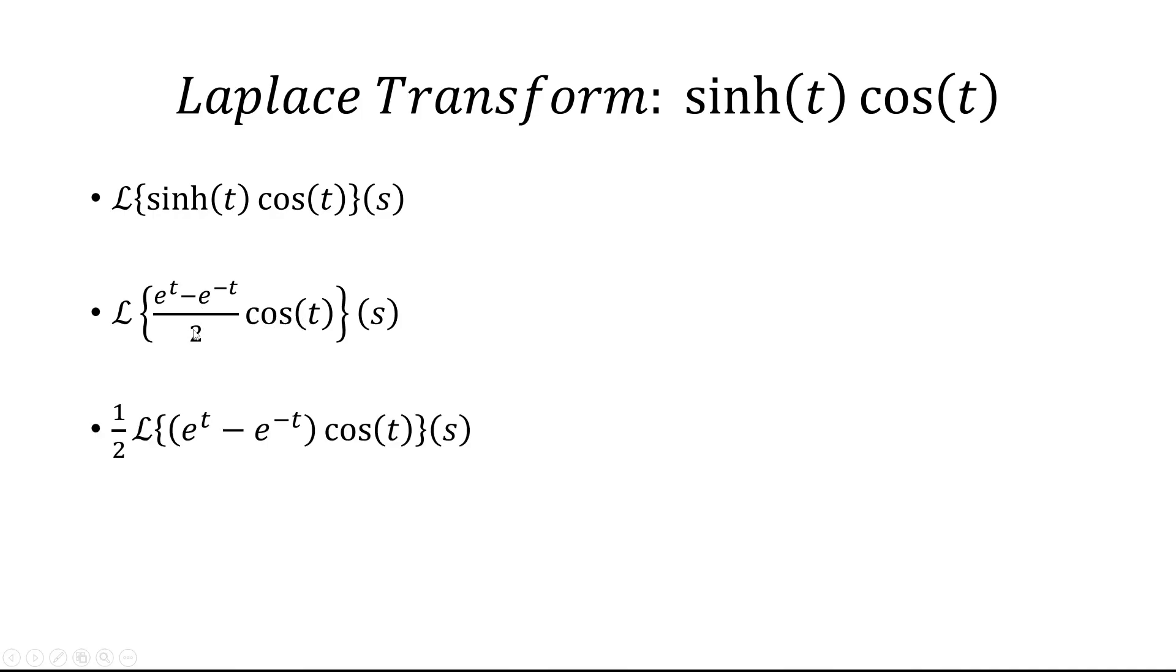The one half comes outside, and then we'll distribute cos(t) to e^t and negative e^(-t) to get this.